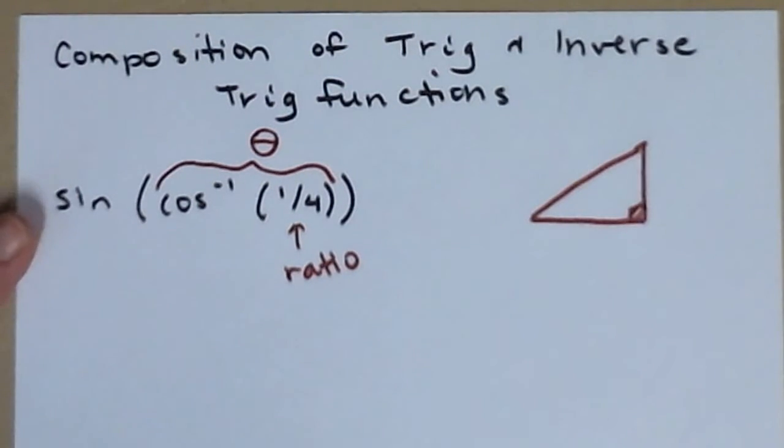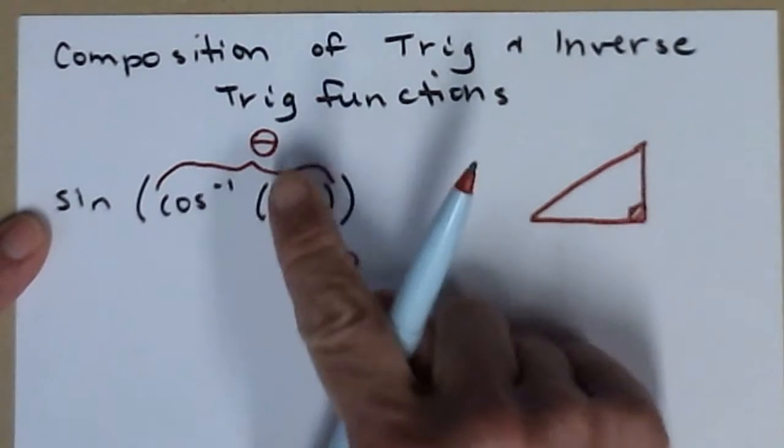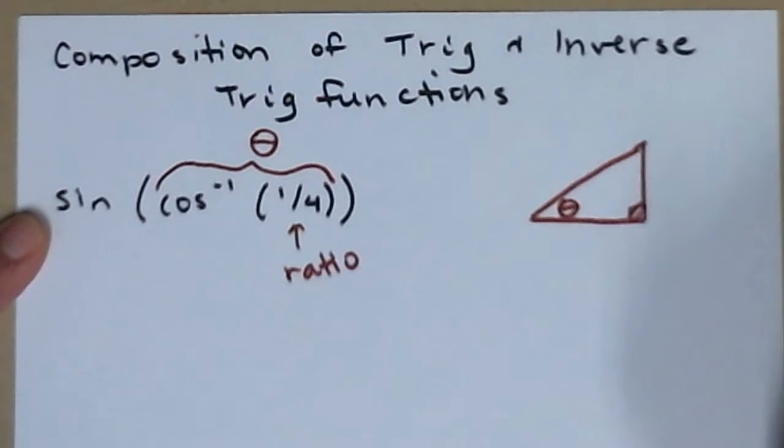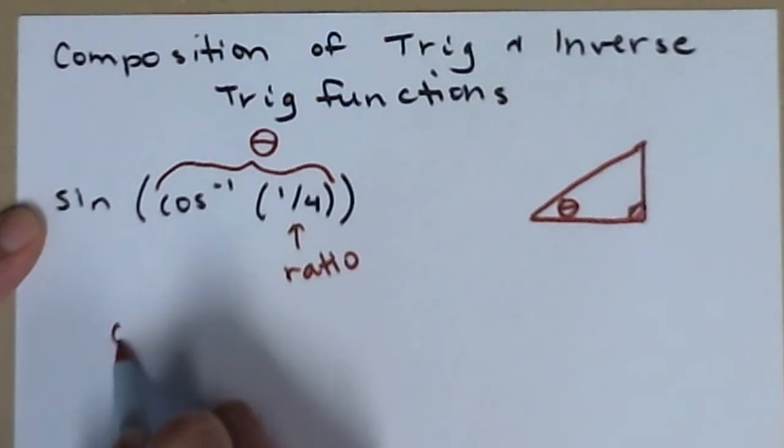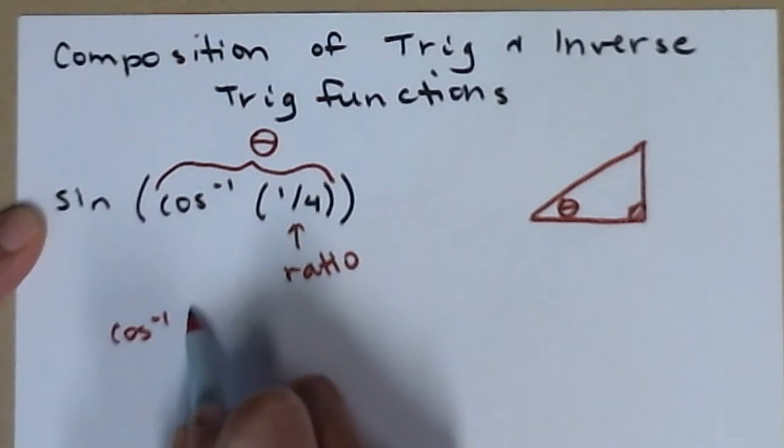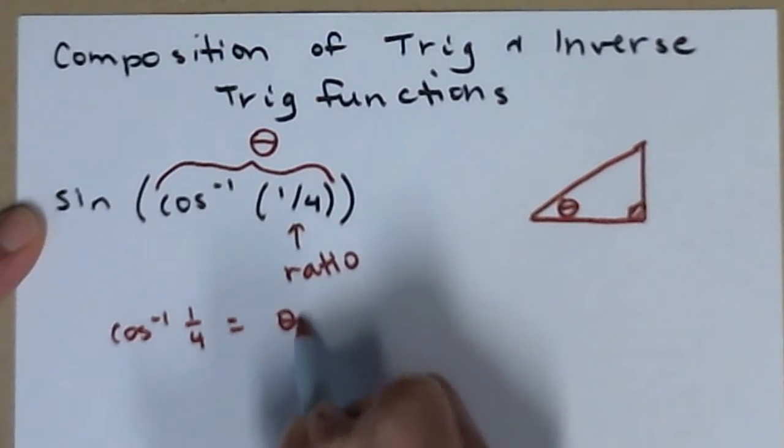I'm going to draw a right triangle and find theta. So here's what I have: the inverse cosine of one-fourth equals theta. I made that up. That's what it is now.